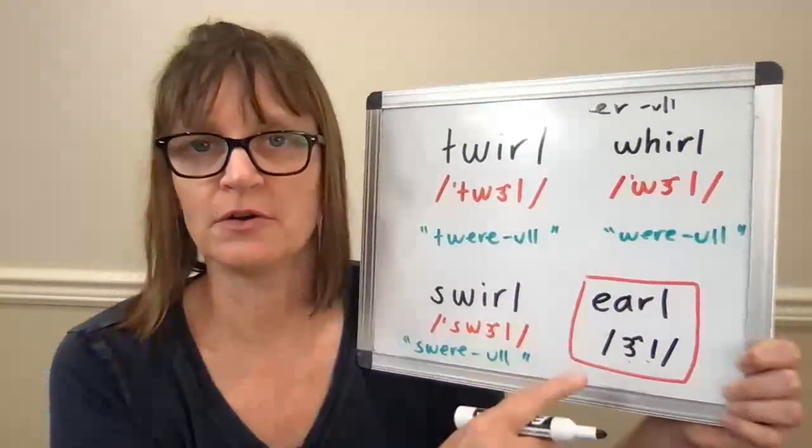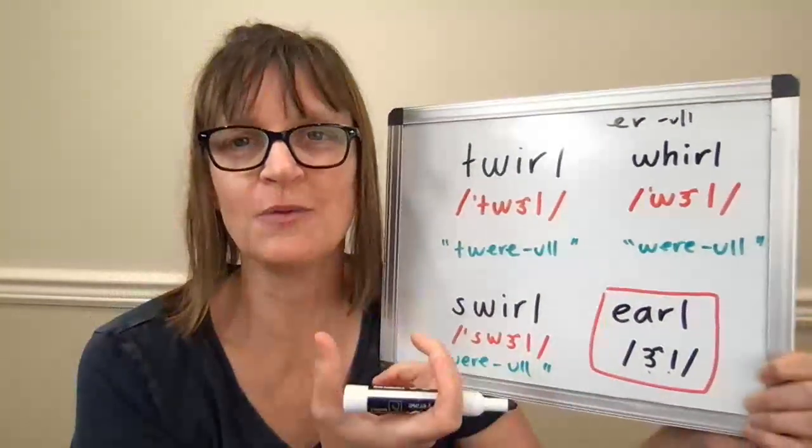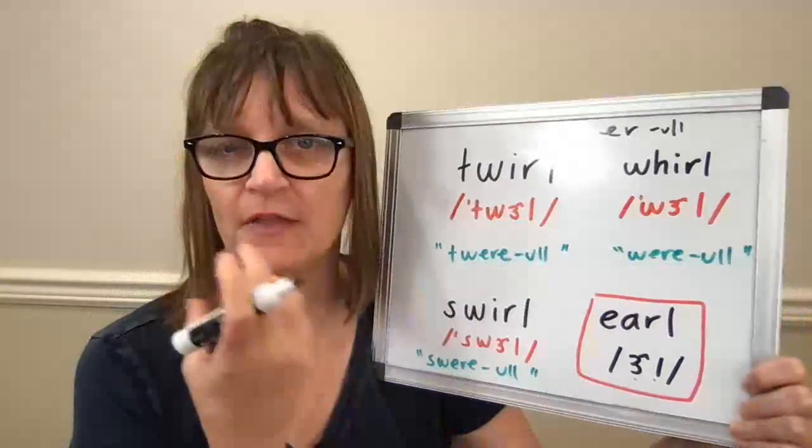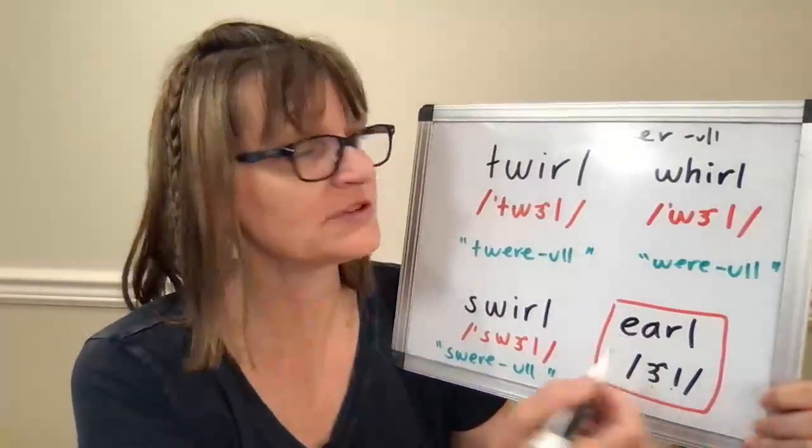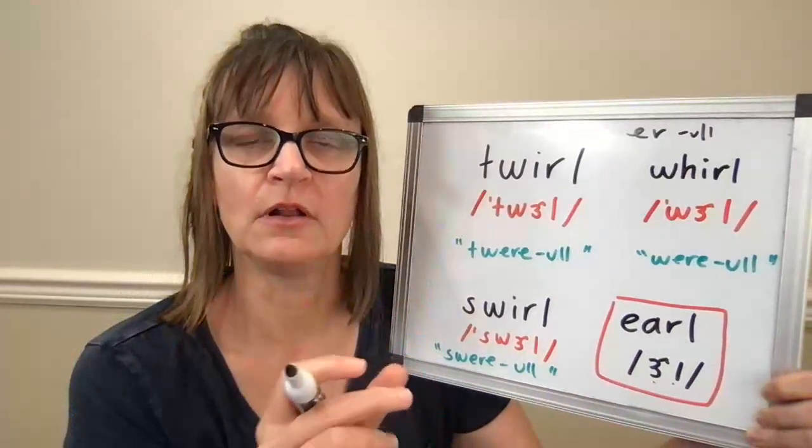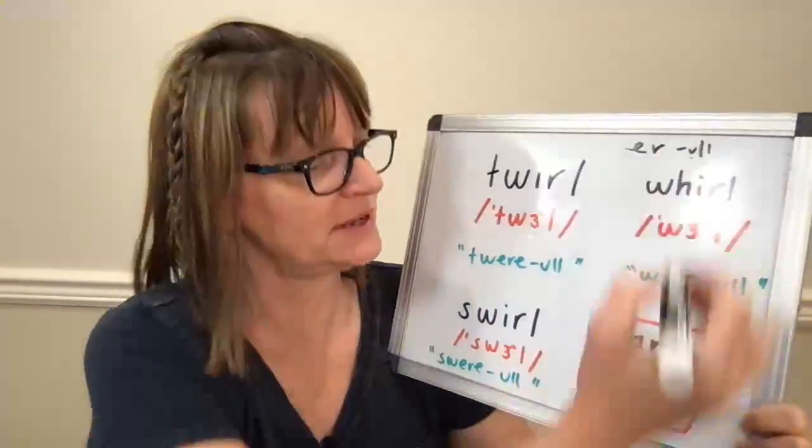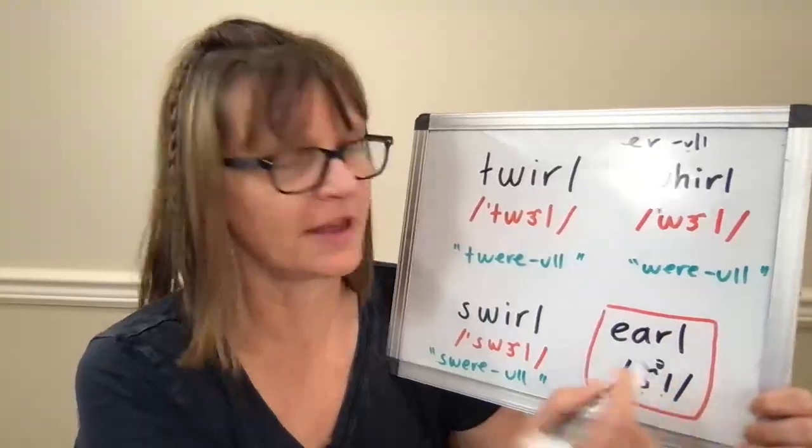So starting with the word earl, you can hear when I say it quickly that I just move from the R to the L. But if I go more slowly, earl, you can hear that there's a little bit of a schwa sound before my dark L.